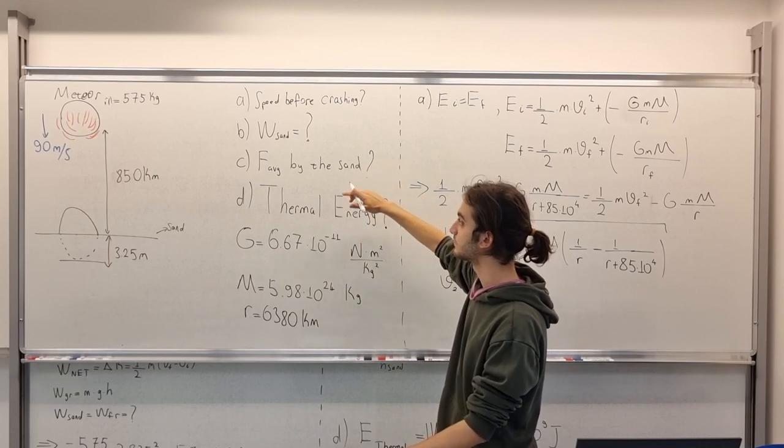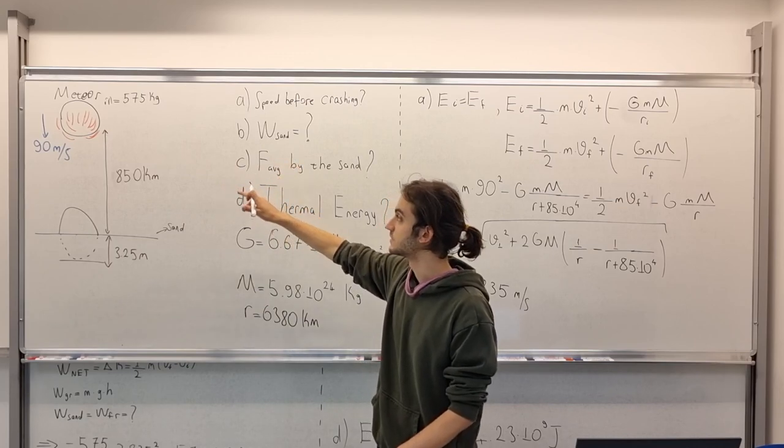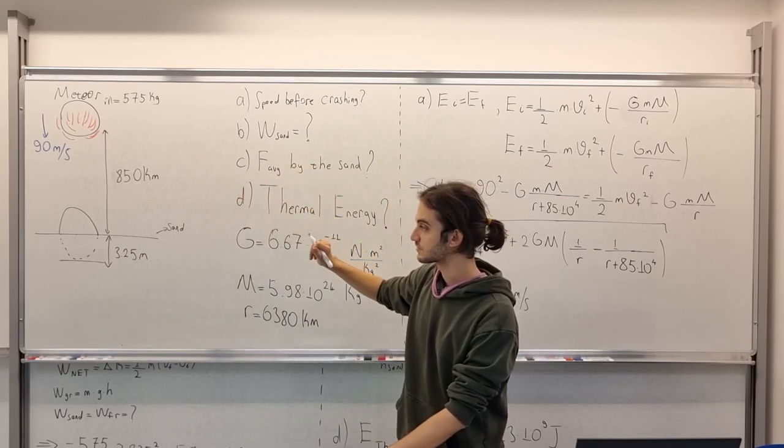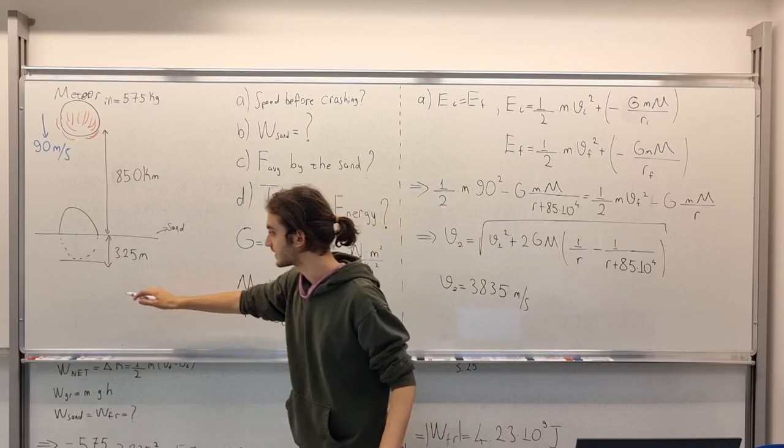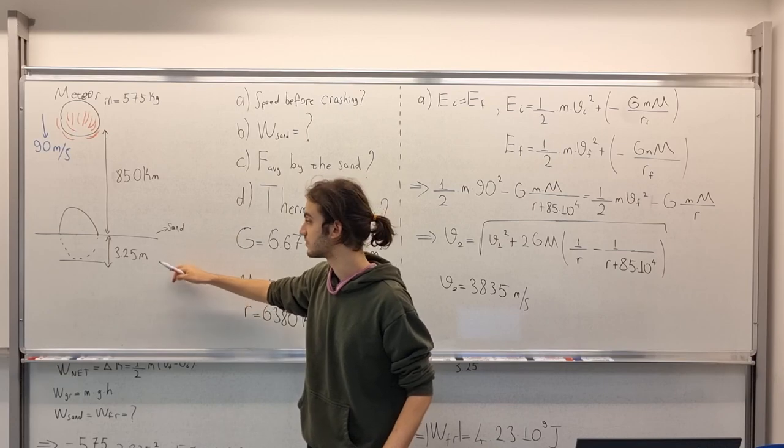In option B, we need to find the work done on this meteor by the sand for it to stop. And it stops at this height, I mean this deepness level, which is 3.25 meters.